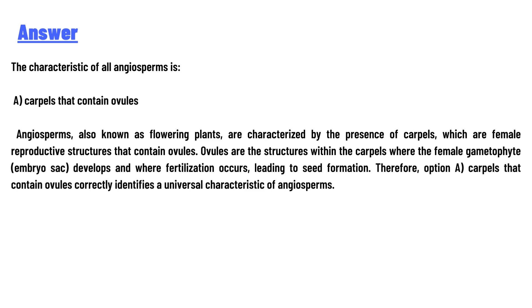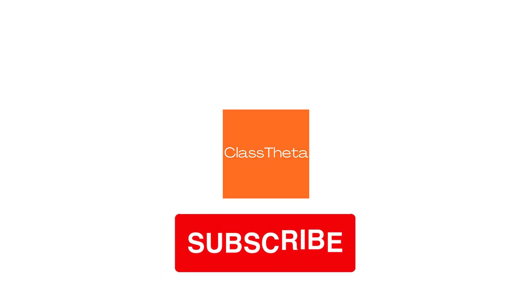Fertilization within the ovules leads to seed formation. Therefore, option A — carpels that contain ovules — correctly identifies a universal characteristic of angiosperms.